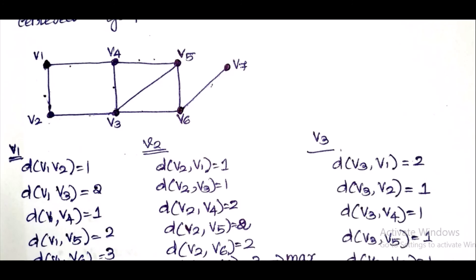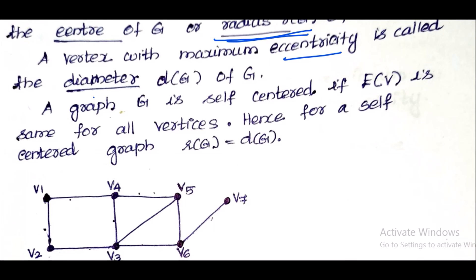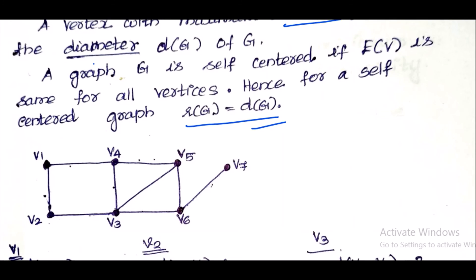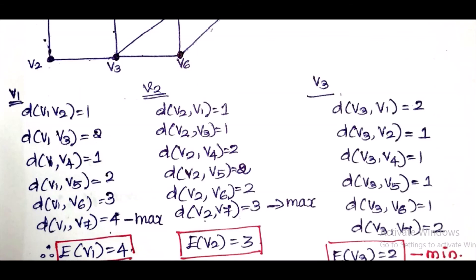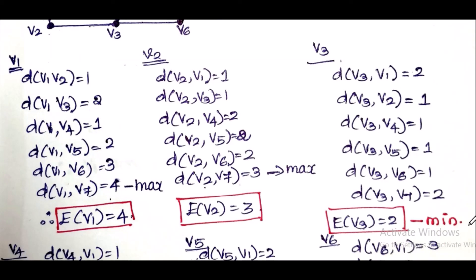A graph is considered self-centered if the eccentricity is the same for all vertices. Hence for a self-centered graph, every vertex has equal eccentricity. We can calculate distances v2 and v3 with their respective adjustment distances.